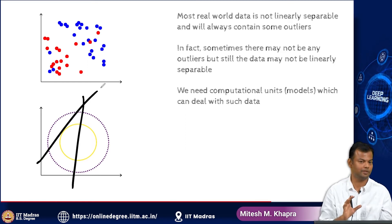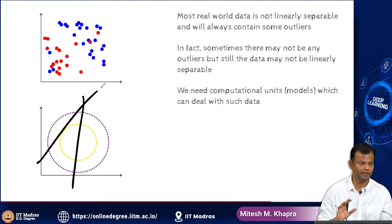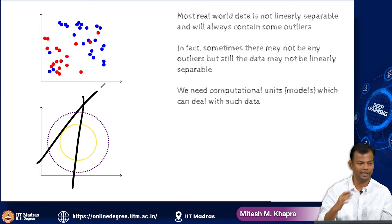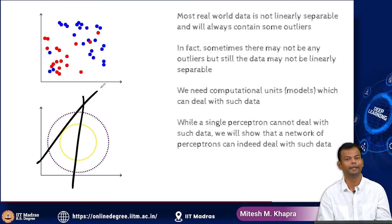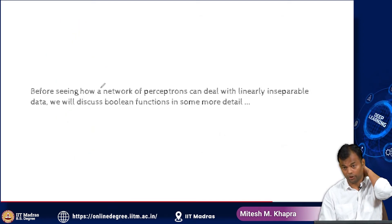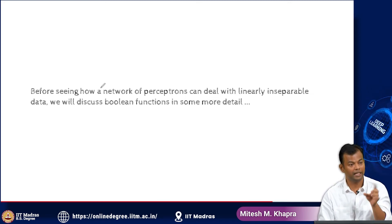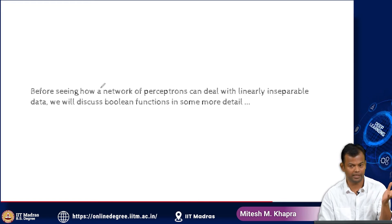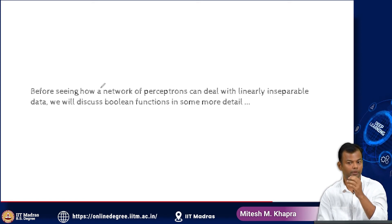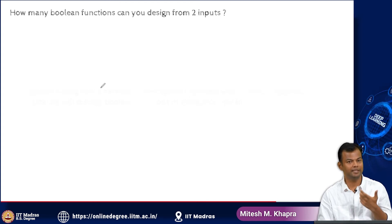What I mean by 'can handle' is something we will come back to in a later lecture, but you have a rough idea — it cannot find a line which separates the positive points from the negative points. With a single perceptron we cannot do this, but with a network of perceptrons we can. Whatever a network means — we will define that — with it you can separate positive points from negative points even if the data is not linearly separable.